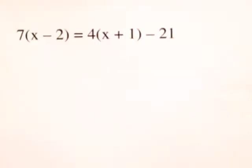For this problem, let's solve the linear equation. We have 7 times the quantity x minus 2 equals 4 times the quantity x plus 1 minus 21.